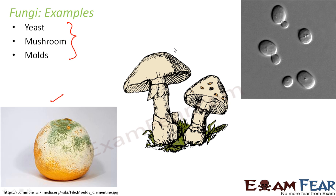Mushrooms are the ones which you often eat as well — they are edible, and you would have eaten dishes prepared from mushroom. So mushrooms are also nothing but fungi. Yeast is often used in the baking industry — if you want to prepare bread or certain types of cakes, you need yeast. If you go to a departmental store, you will see yeast powder available in packets, which is prepared from yeast. These are some examples of fungi, and we will see how they are helpful and harmful to us.